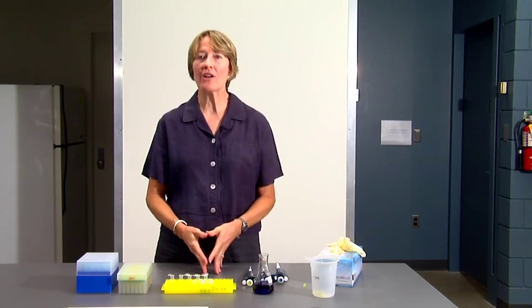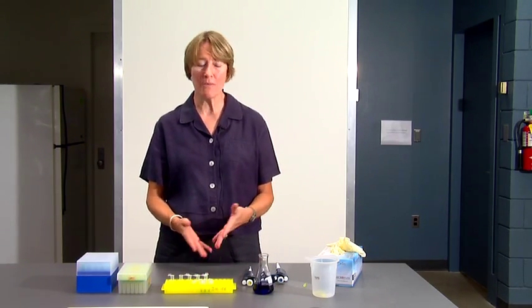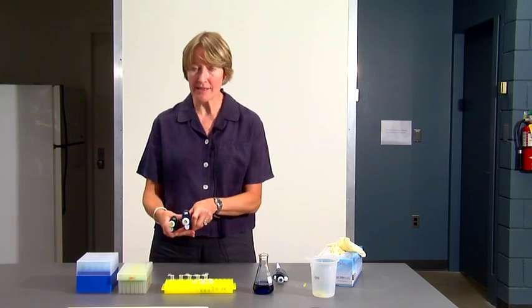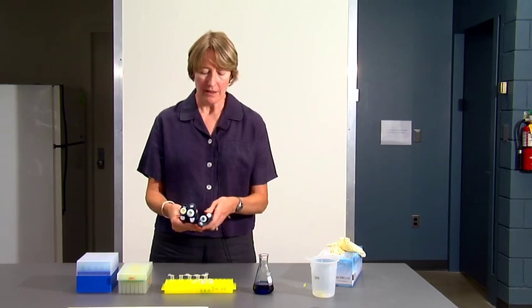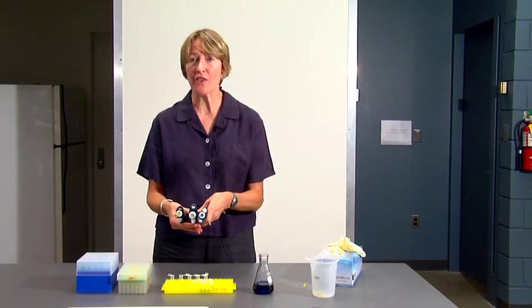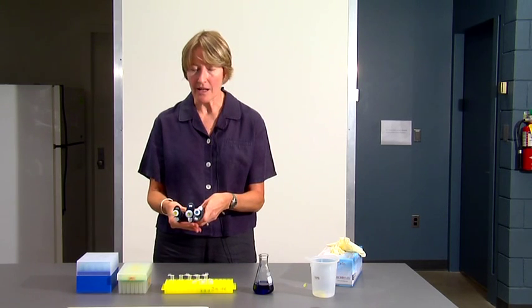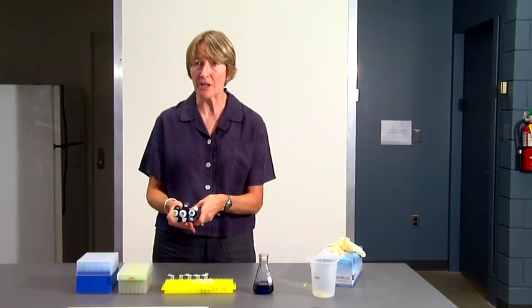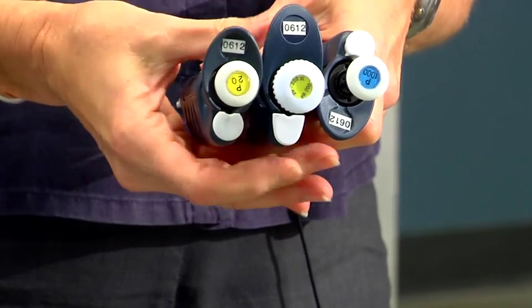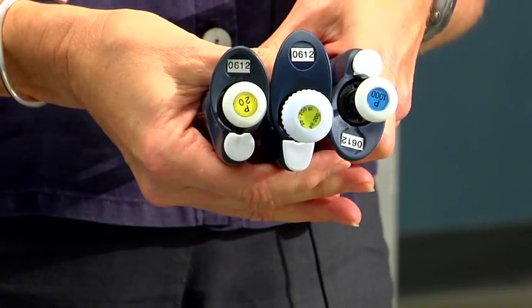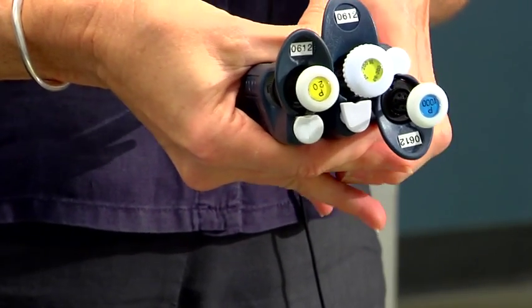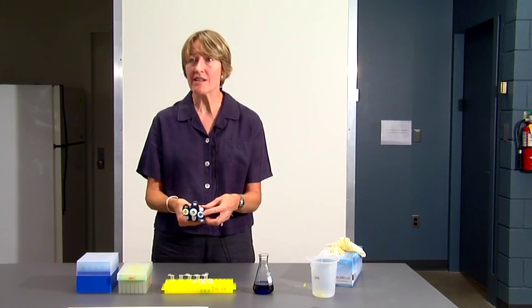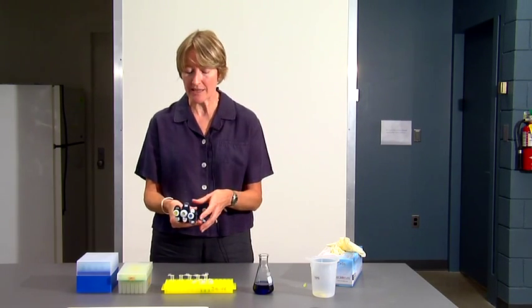Now I'm going to show you how to actually use the pipets to measure a specified volume. I want you to notice that the pipets are color-coded, and on the top of the plunger you'll see either a yellow dot. On the P20 and the P200 you have a yellow dot on the plunger. On the P1000 you have a blue dot.